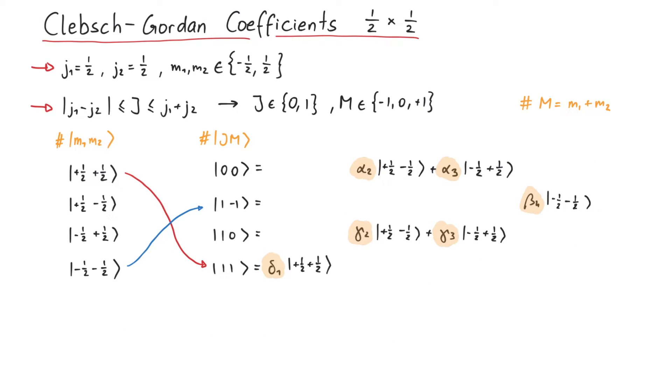However, the other states cannot be linked uniquely at this point, so we have to assume a linear combination of both states. So only six coefficients remain.